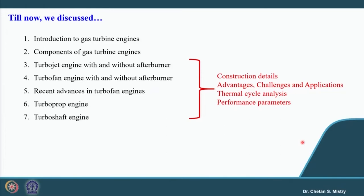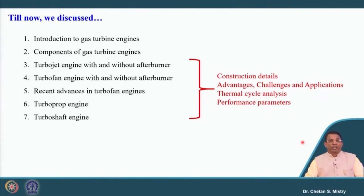Up till now, for the last 10 weeks we were discussing about gas turbine engines. Then we started discussing about the components for gas turbine engines and discussed in detail the importance of those components. Then we started discussing about the turbojet engine with and without afterburner configuration, and discussed different types of turbofan engines, including turbofan engines with and without afterburner. This afterburner configuration, we realized, is used for military purposes or military aircraft.